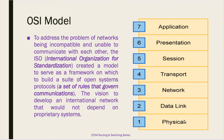The physical layer defines certain specifications — mechanical, functional, and electrical — needed for activating, maintaining, and deactivating the physical link between end devices. The physical layer enables bit transmission, so we are dealing with bits and bytes here. Other things that happen at this layer include timings of voltage change, the physical data rate, and the maximum transmission distance for a given type of physical medium. All things dealing with the physical aspect happen at the physical layer, which is layer 1.